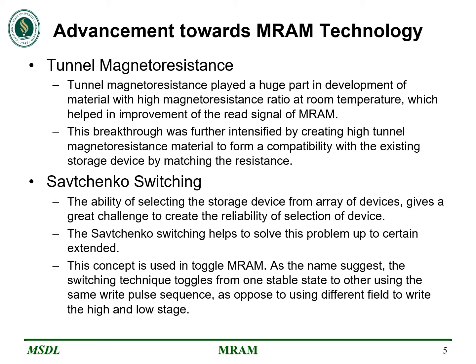There were certain issues addressed by Savtchenko Switching. The foremost issue was the ability to select a stored device from a huge array of stored devices. Savtchenko Switching addressed this problem to a certain extent. To understand Savtchenko Switching, we must understand Toggle MRAM. Toggle MRAM is named for the technique of switching between one state to another using just one write pulse — the same write pulse is used through the switching instead of having multiple pulses for multiple stages.